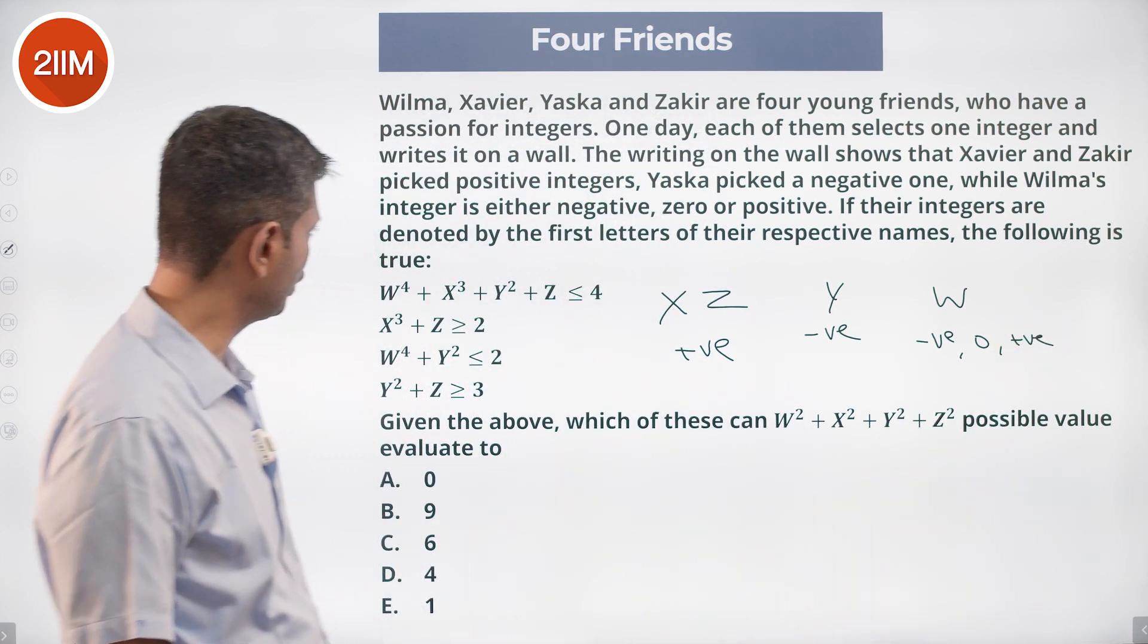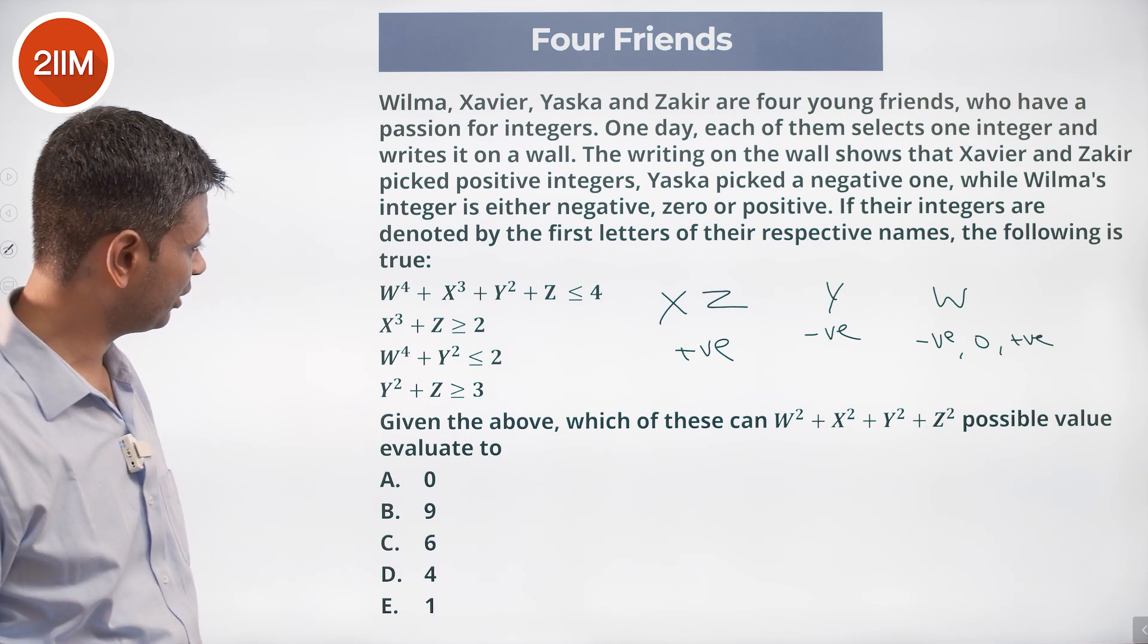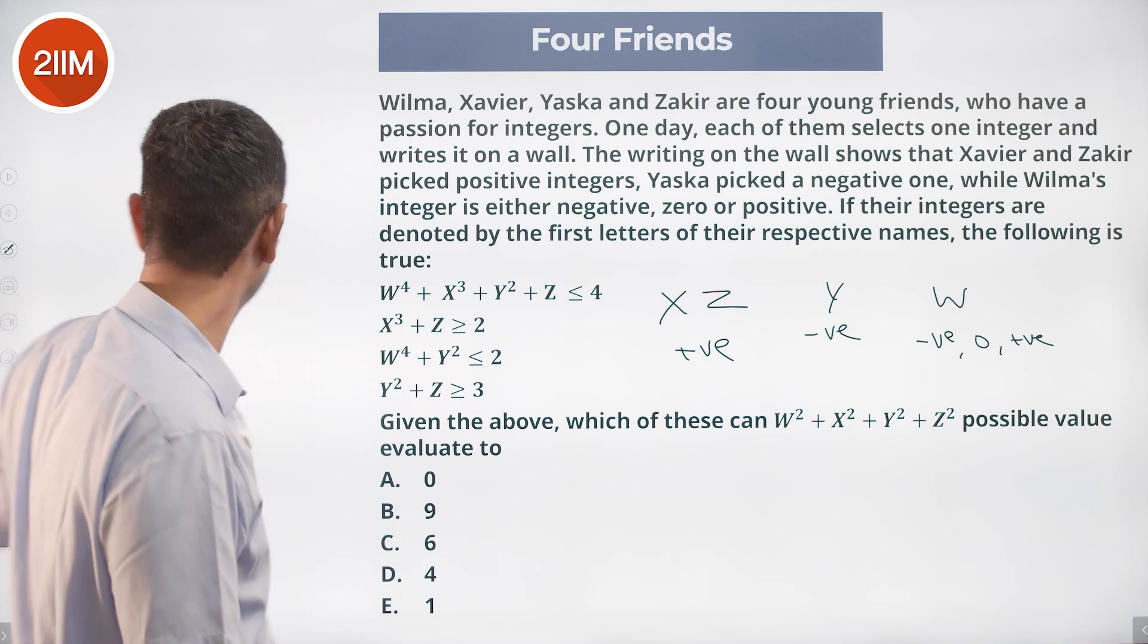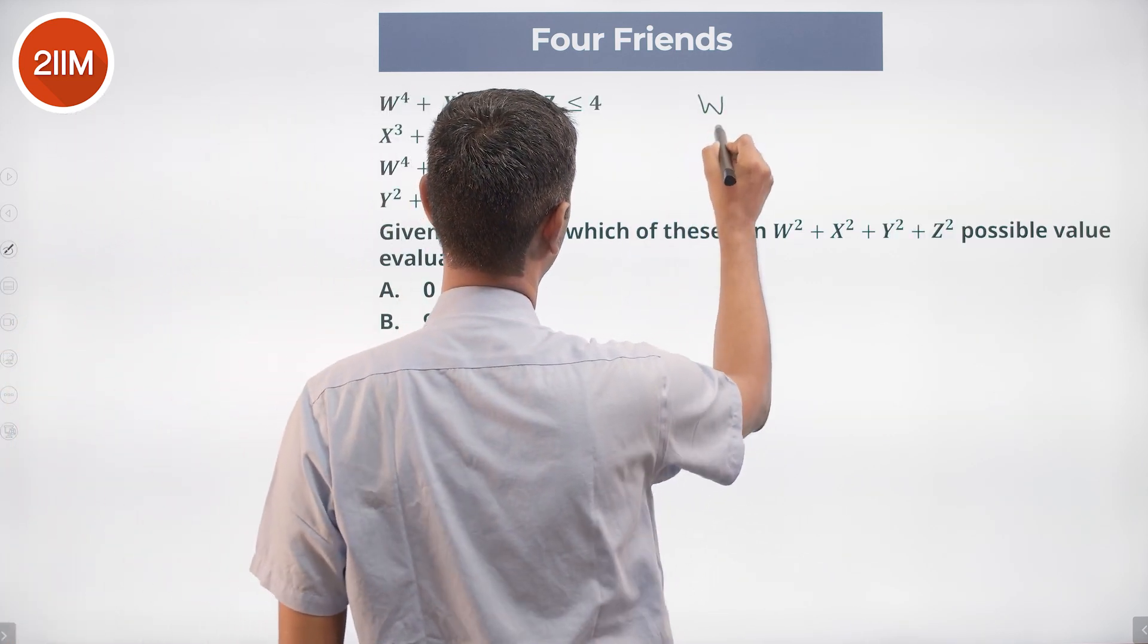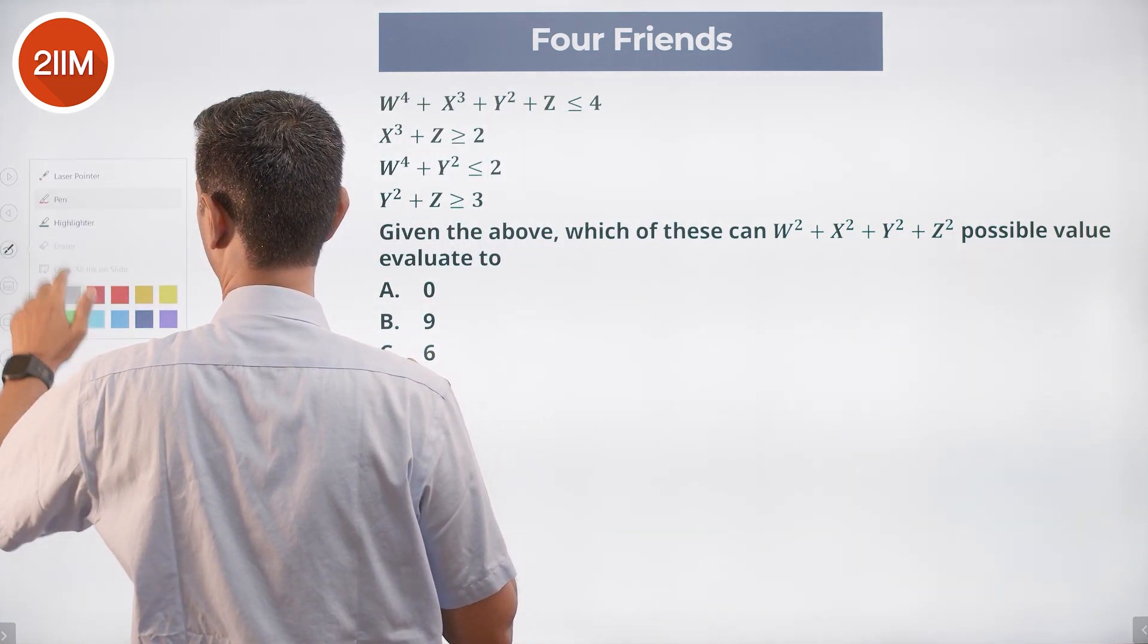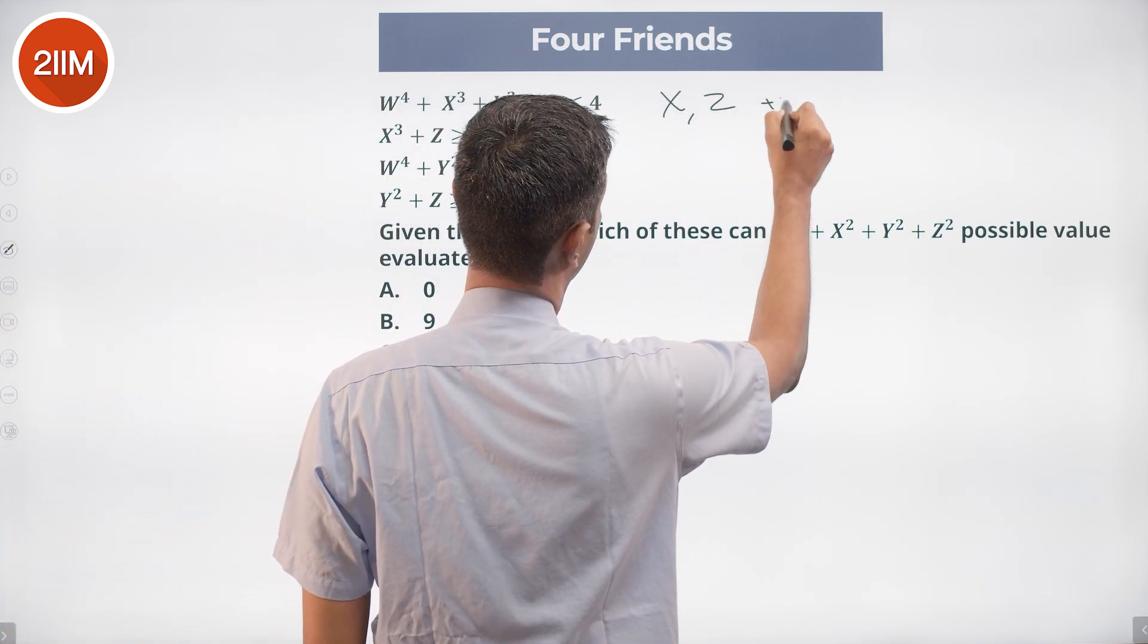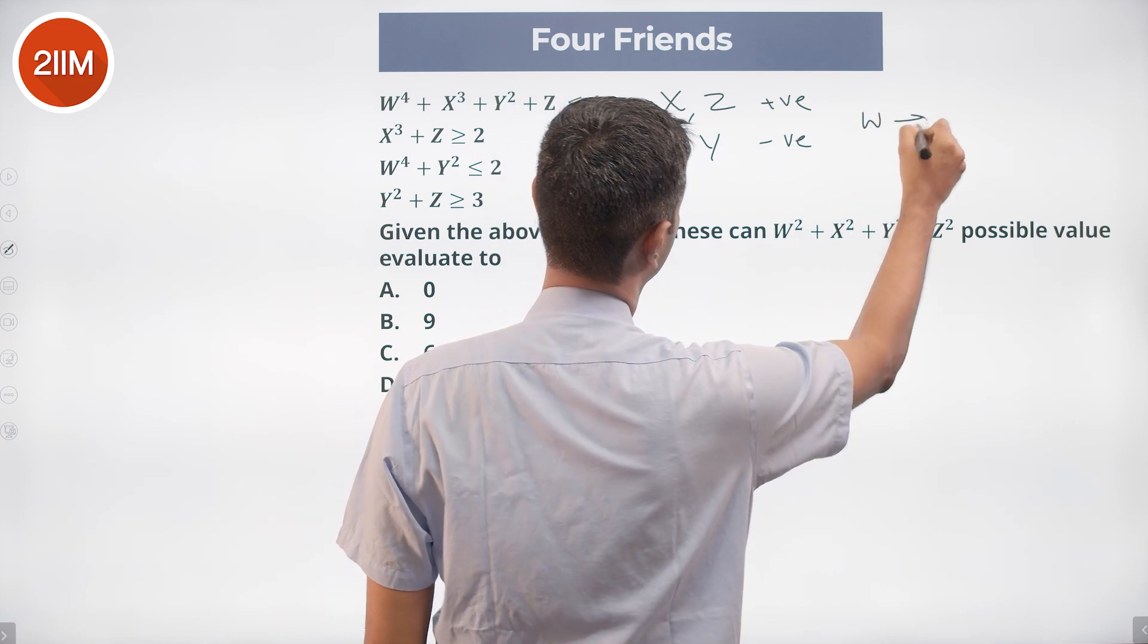Their integers are denoted by the first letters of their respective names. The following is true: W⁴ + X³ + Y² + Z ≤ 4. And from all of this we know that X and Z are positive, we know that Y is negative, and W is a free bird.